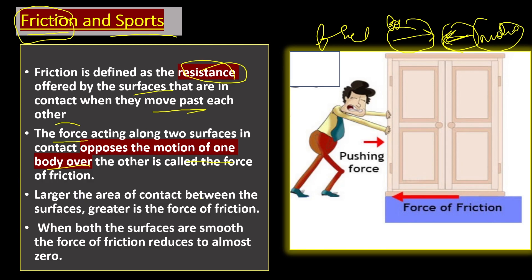The larger the area of contact between surfaces, the greater the force of friction. If both surfaces are smooth, friction will be less. For example, in cold weather if you rub your hands together there is more friction; but if you apply cream or lotion and rub them, friction is reduced. The smoother the surface, the less friction there is.